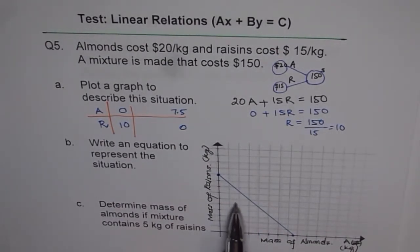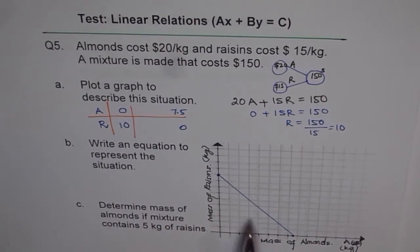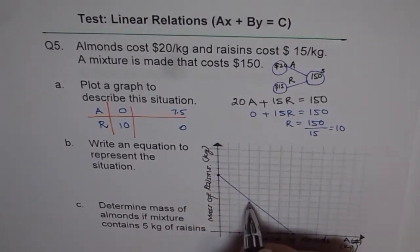This line represents the amount of almonds and raisins which when mixed together will give us a mixture costing $150. For example, let's look at this point.